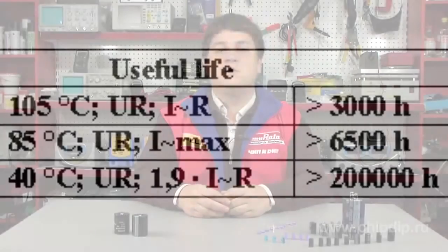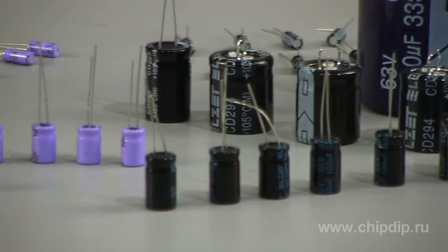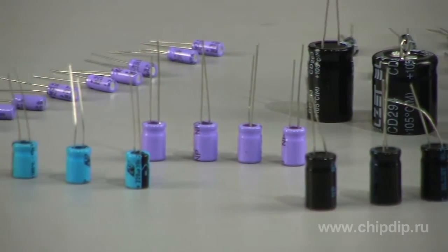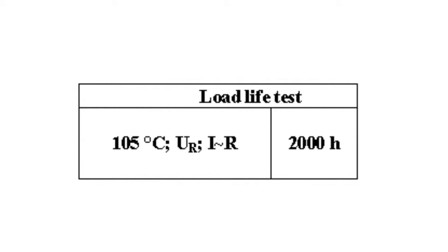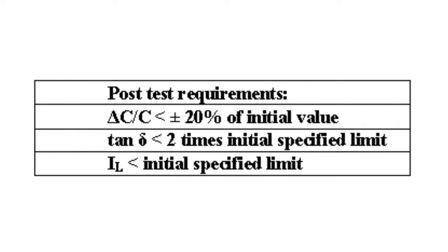The term load life is based on Japan-Asian standards and is used primarily by Asian manufacturers. Load life is calculated similarly under the conditions of rated voltage, current, and temperature, but the breakdown criteria are more stringent. The capacity is reduced by no more than 20%, the loss tangent is increased no more than twice, and the leakage current is not more than the limit specified by the manufacturer.